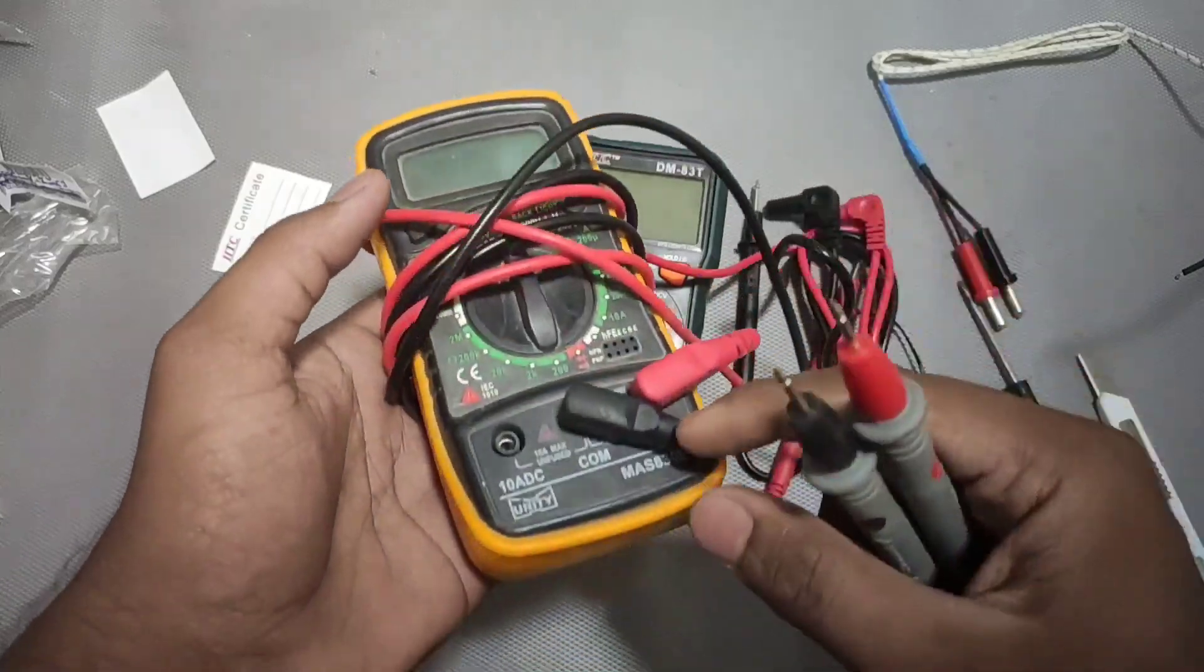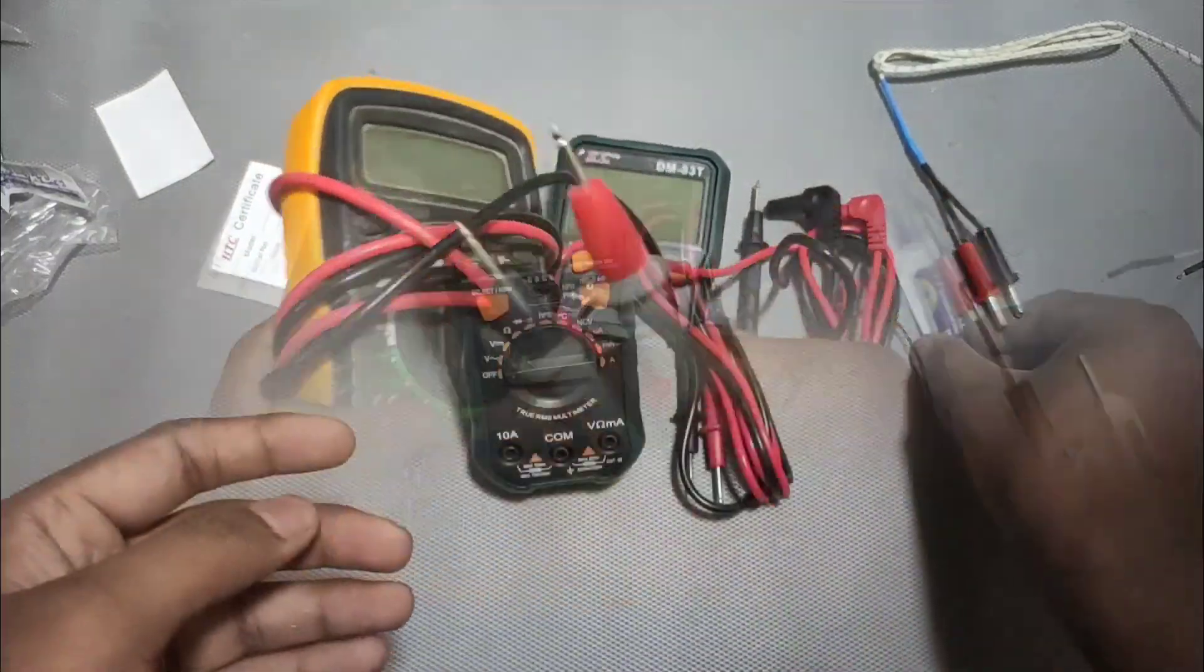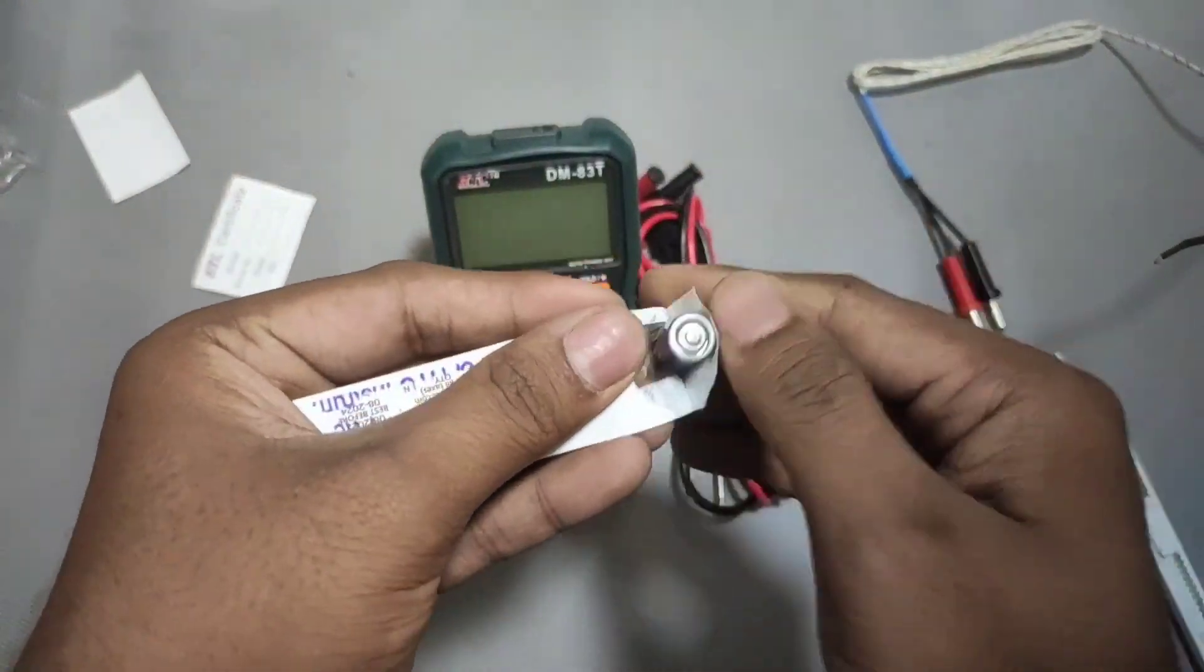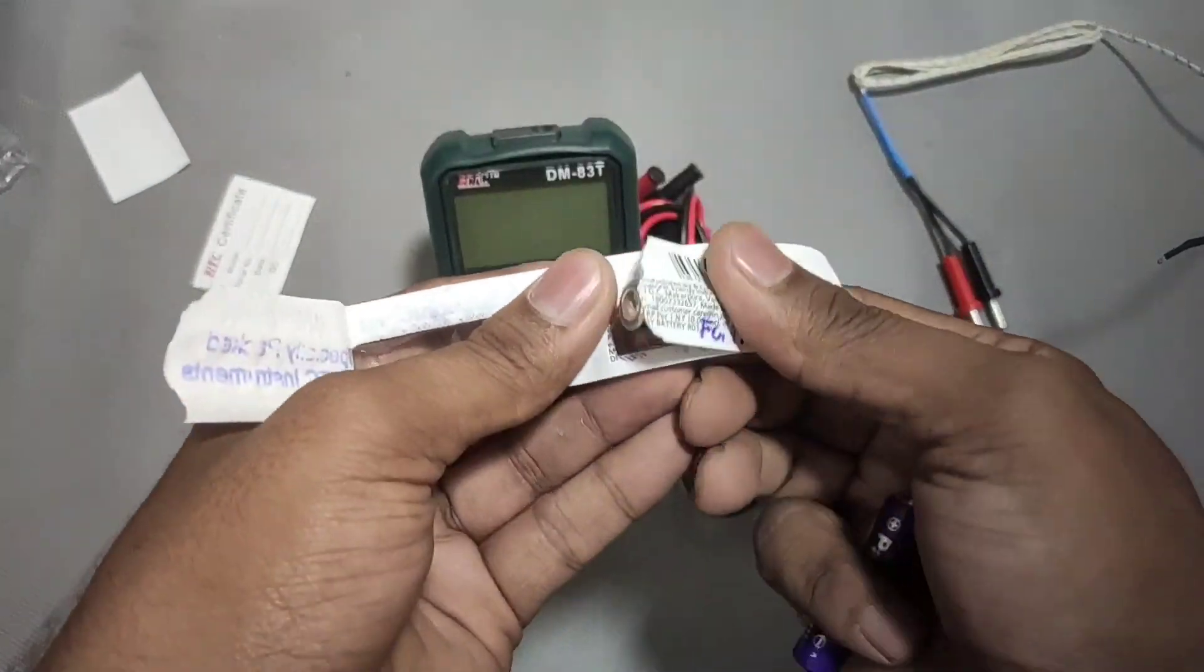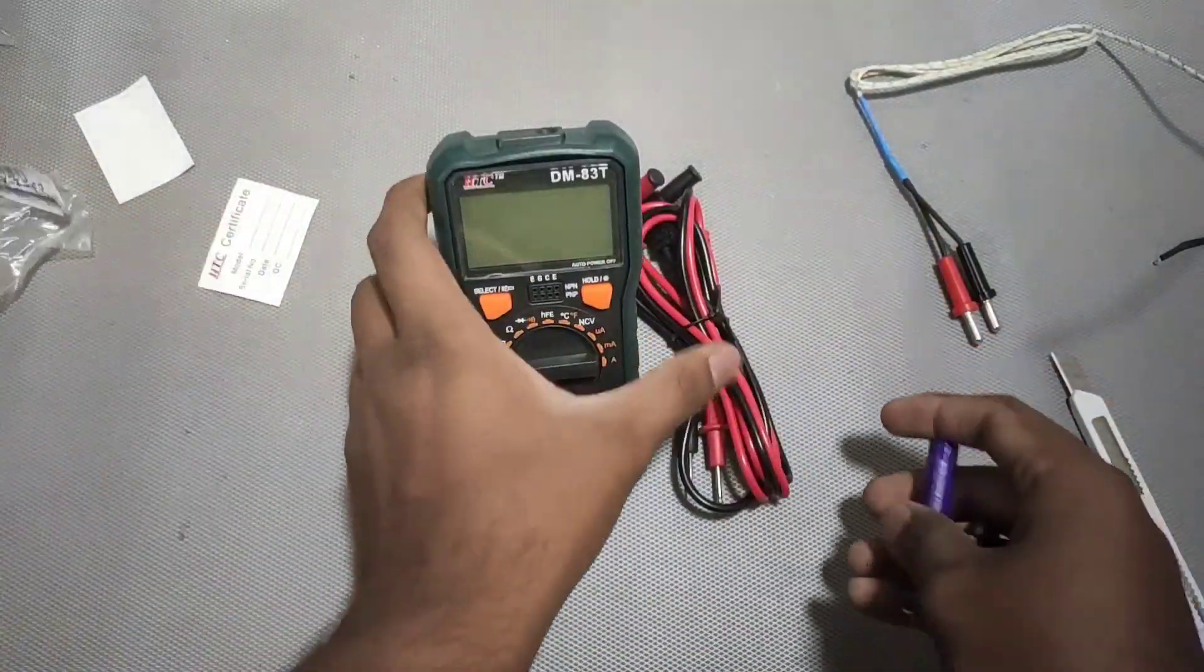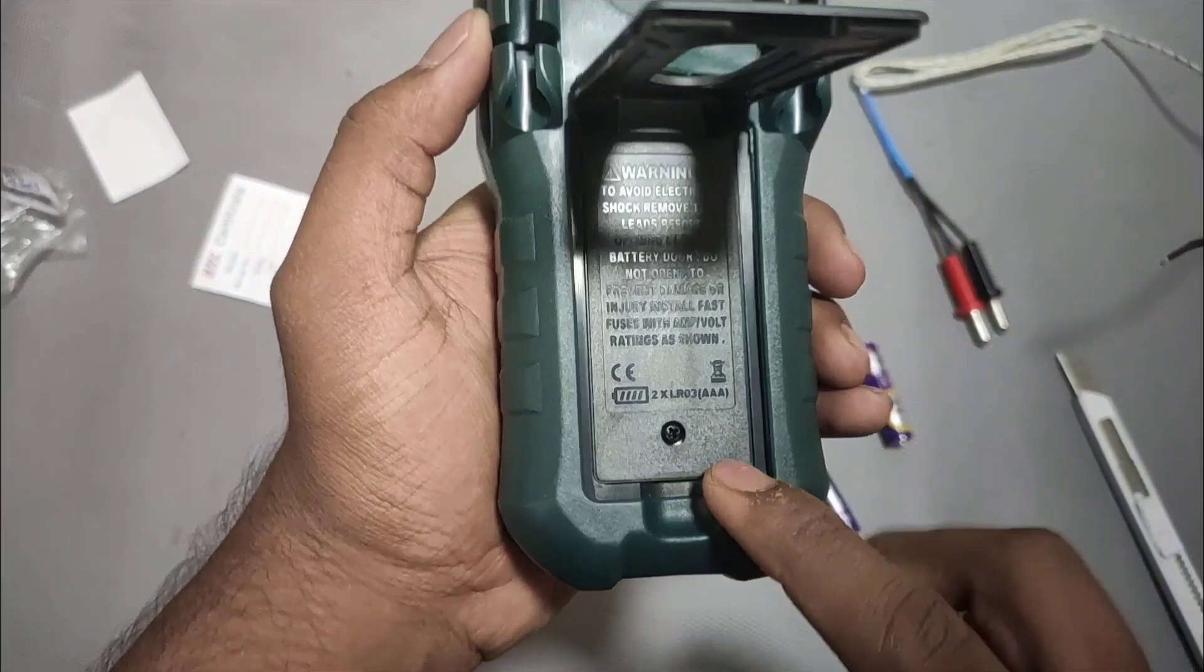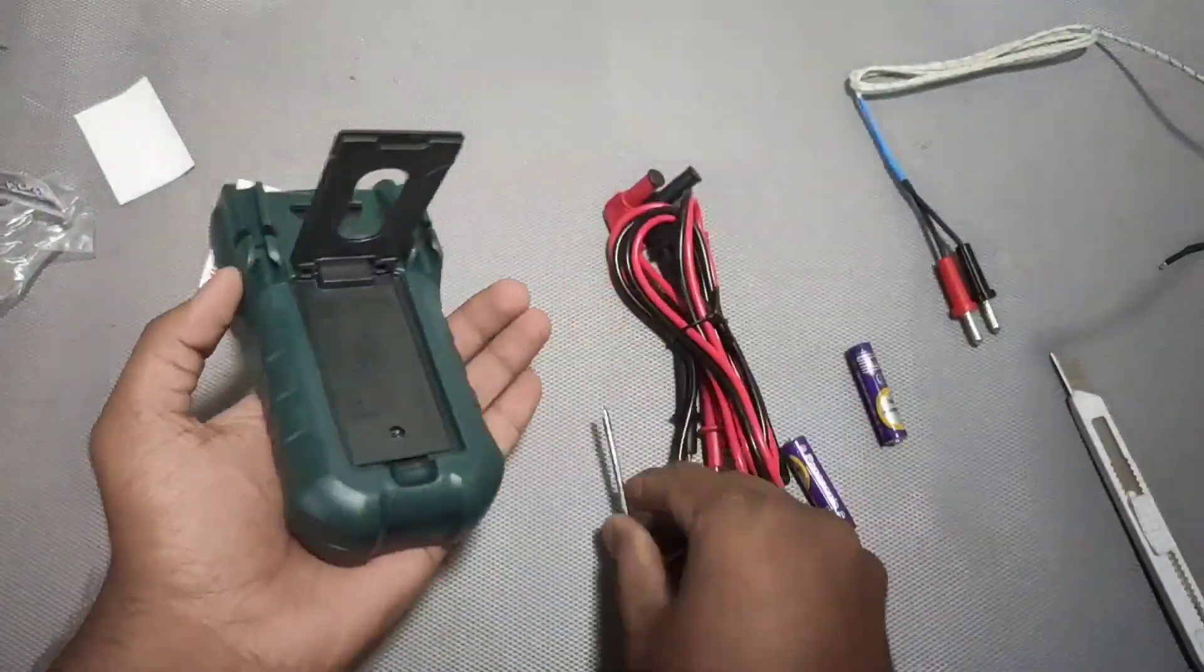High quality leads look something like this which I got in the past. So let's just insert the batteries inside the multimeter. We need to remove the screw.